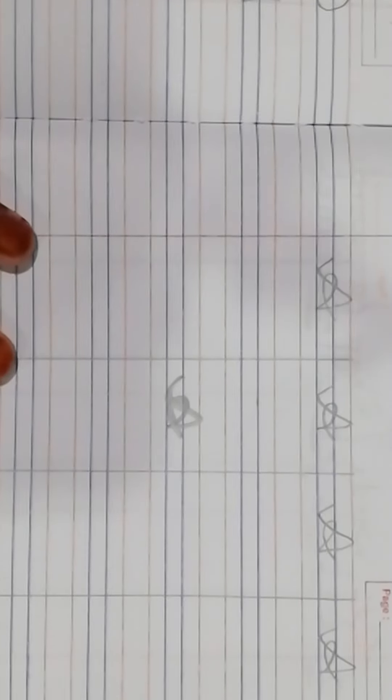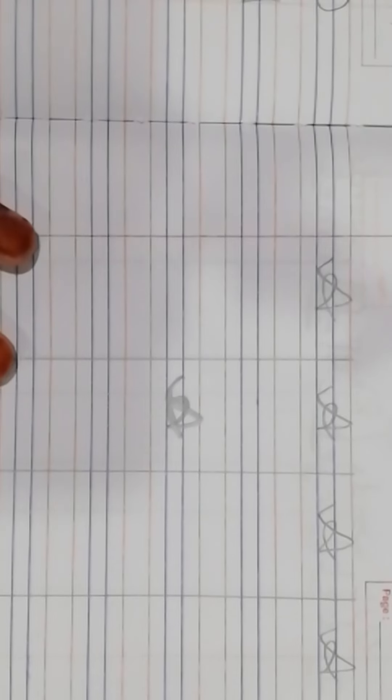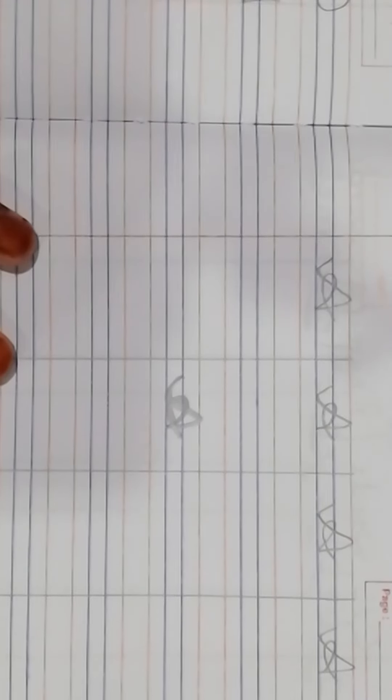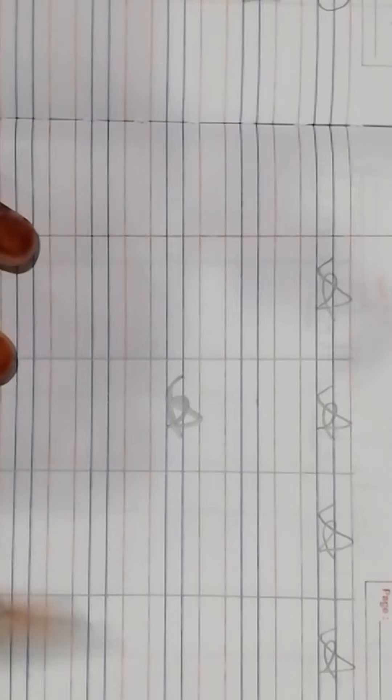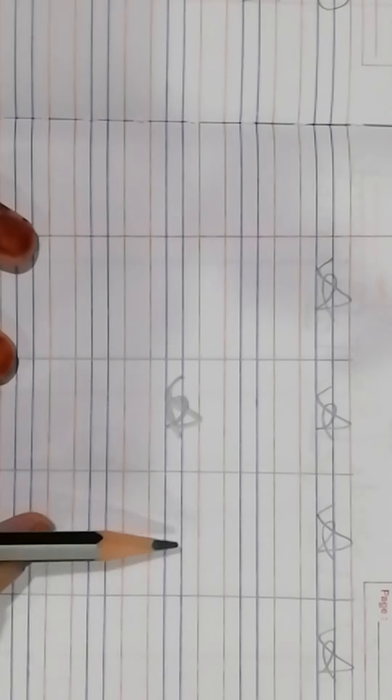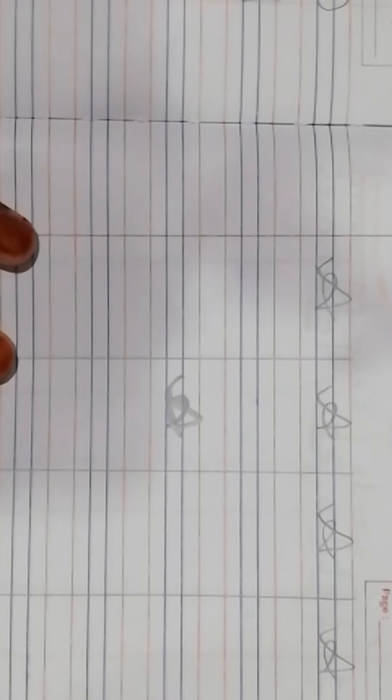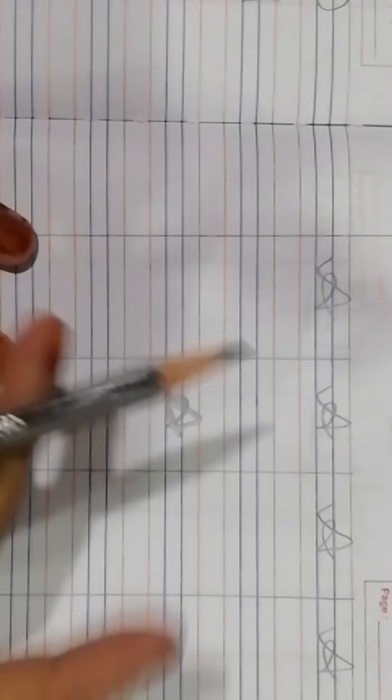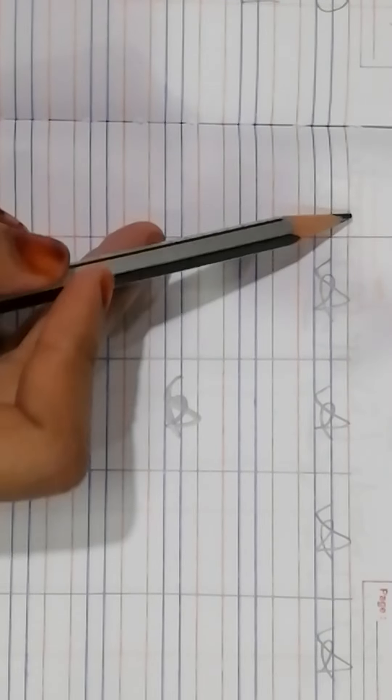So now, we are going to write another letter, that is MAMA letter, capital letter B. So quickly run, bring your four line book, that is red and blue line book, and bring a nice sharpened pencil.